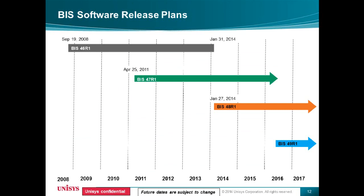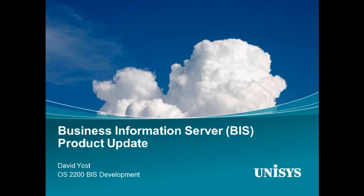Regarding the software release plan: BIZ 46 R1 has an end-of-engineering support date of January 31st, 2014. If you are on BIZ 46 R1, please migrate to the latest version. BIZ 48 R1 is expected on January 27th, 2014. BIZ 47 R1 will continue to be supported — no end-of-support date has been identified at this point. BIZ 49 is a future release with tentative dates, subject to change.